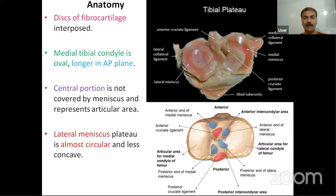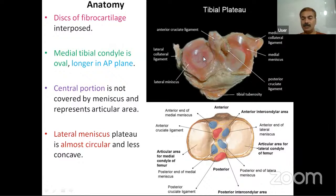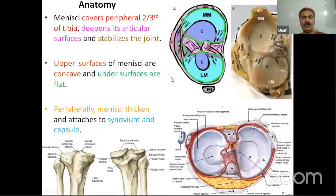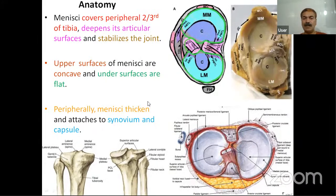The menisci are discs of fibrocartilage interposed between the femoral condyle and the tibial plateau. The medial tibial plateau is longer in the anterior-posterior plane compared to the lateral tibial plateau. The lateral meniscus is almost circular and less concave, whereas the medial one is concave. The menisci cover around two-thirds — the peripheral two-thirds — of the tibia. They deepen the articular surfaces and stabilize the joint. Upper surfaces of the menisci are concave, while the under surfaces are flat. Peripherally, the menisci thicken and attach to the synovium and capsule.